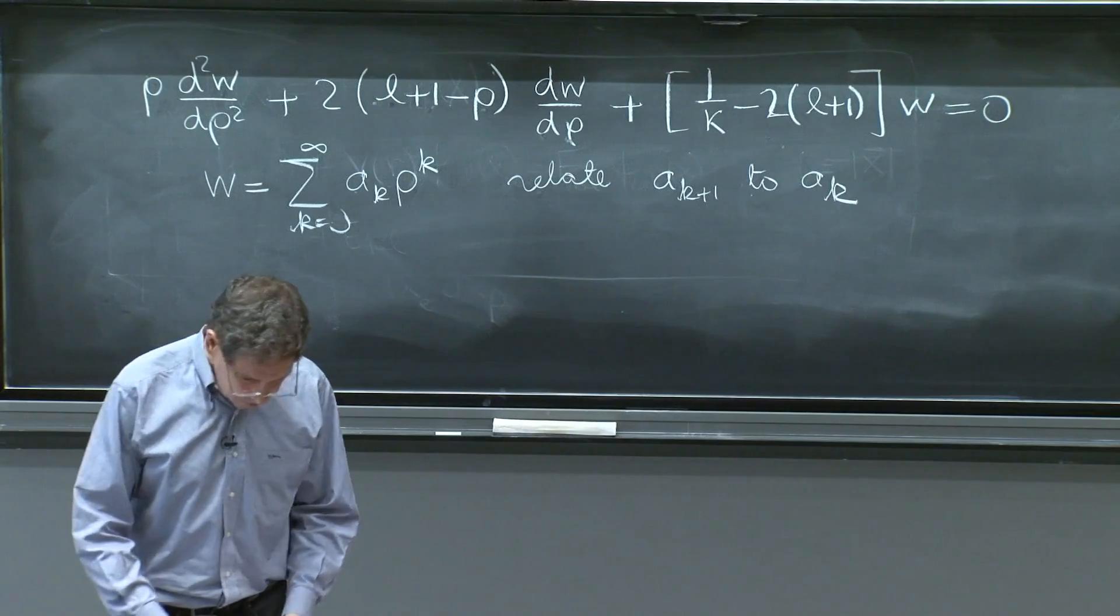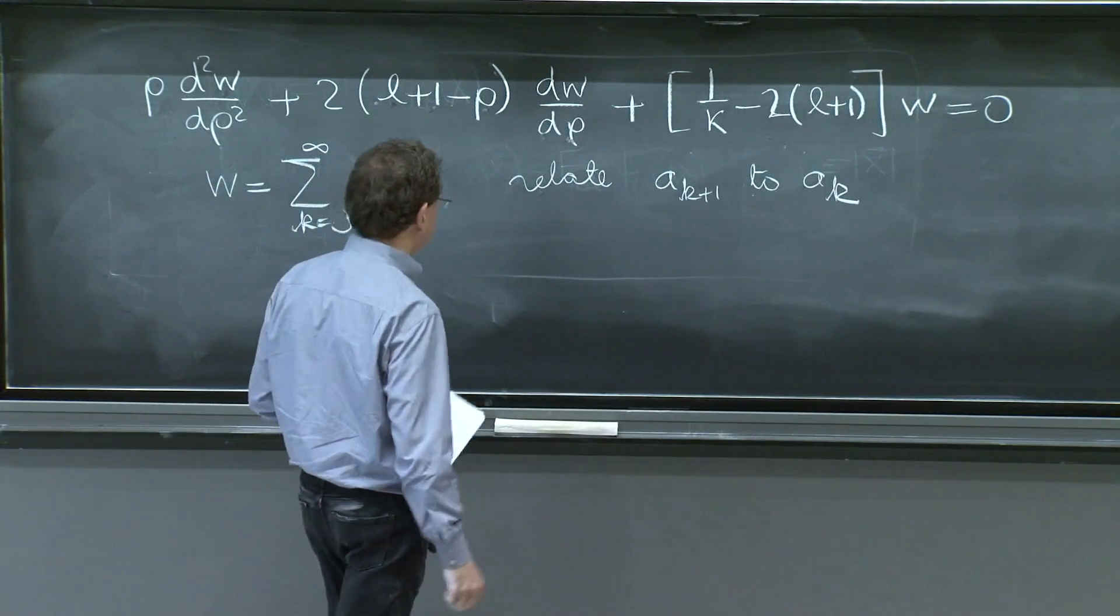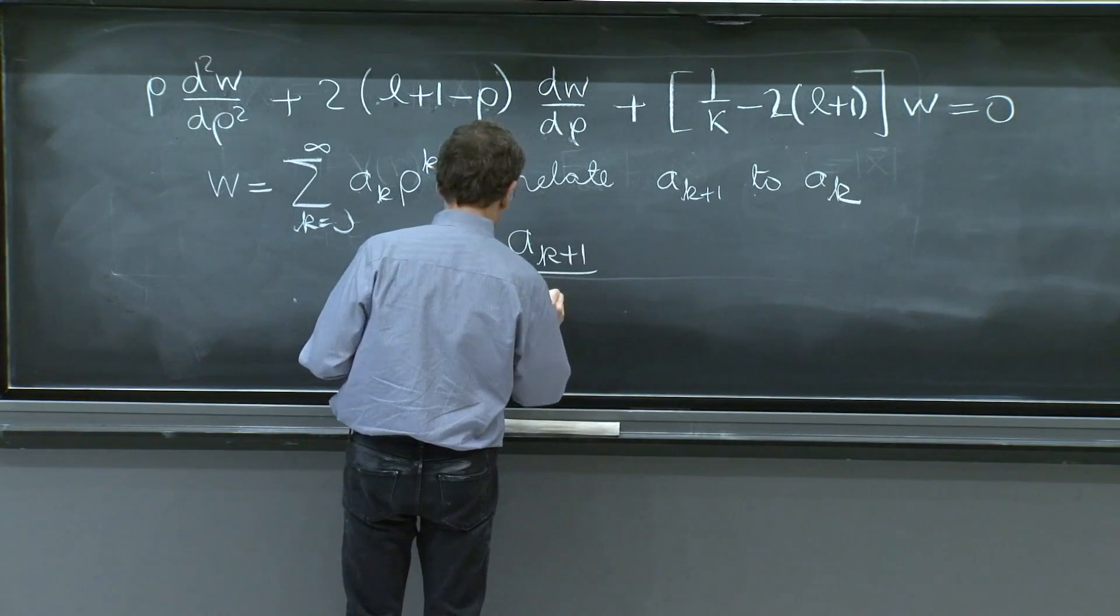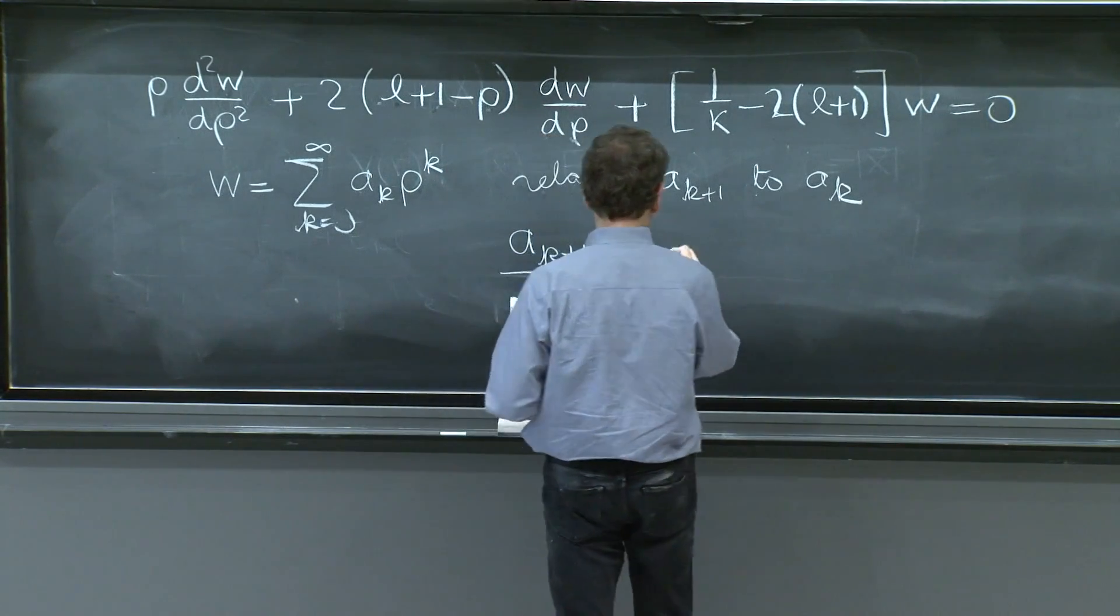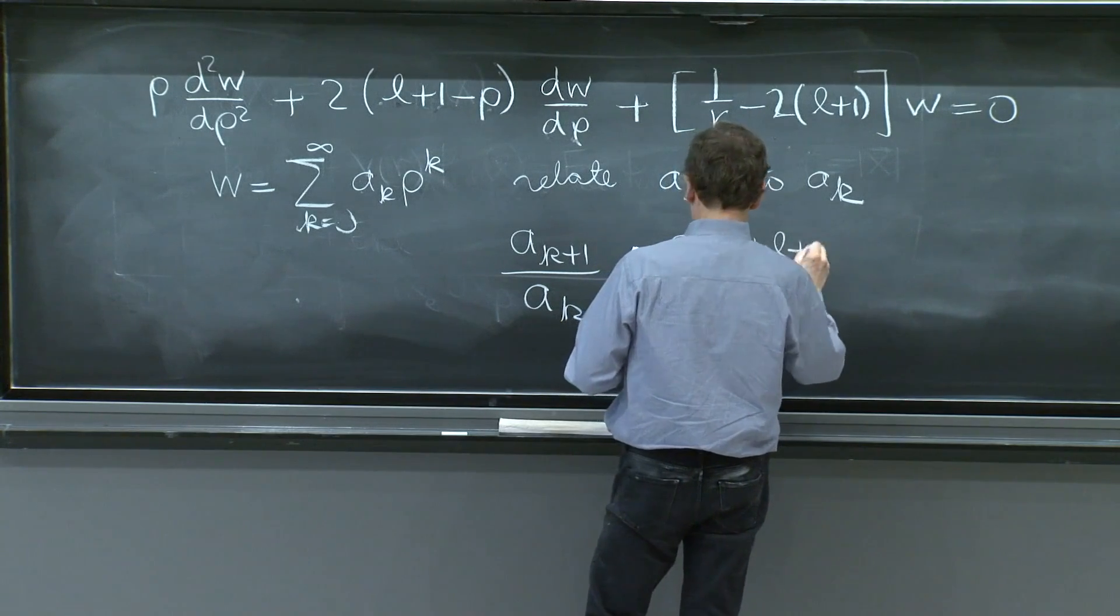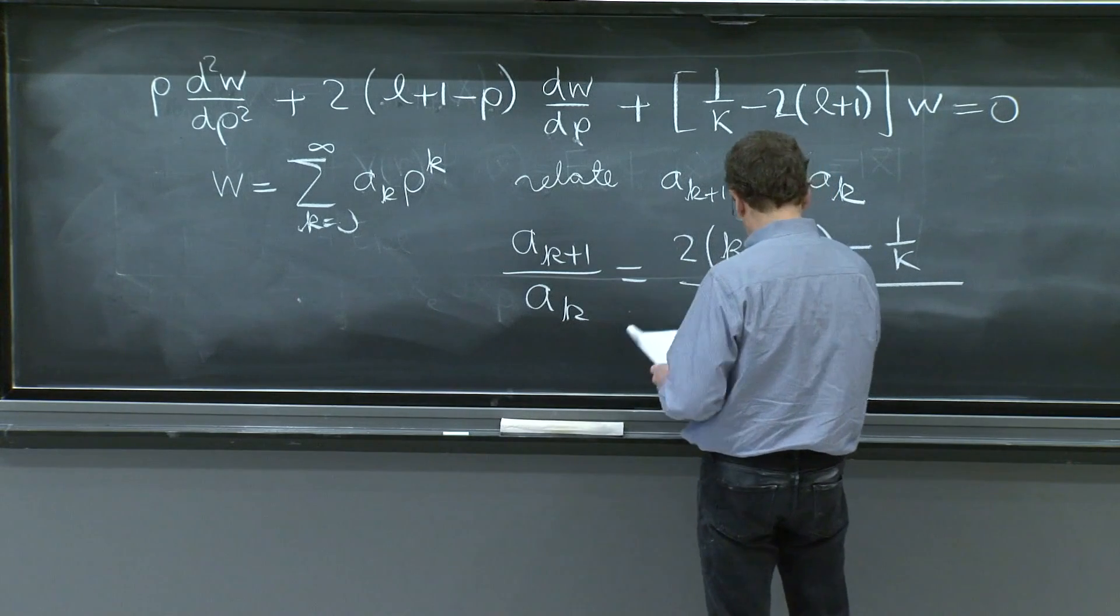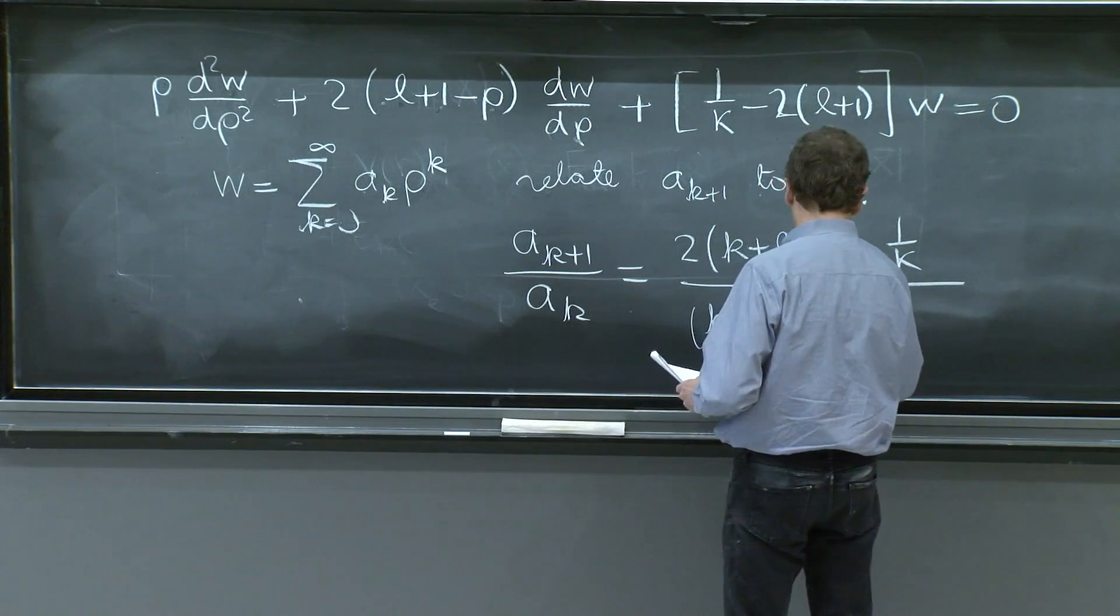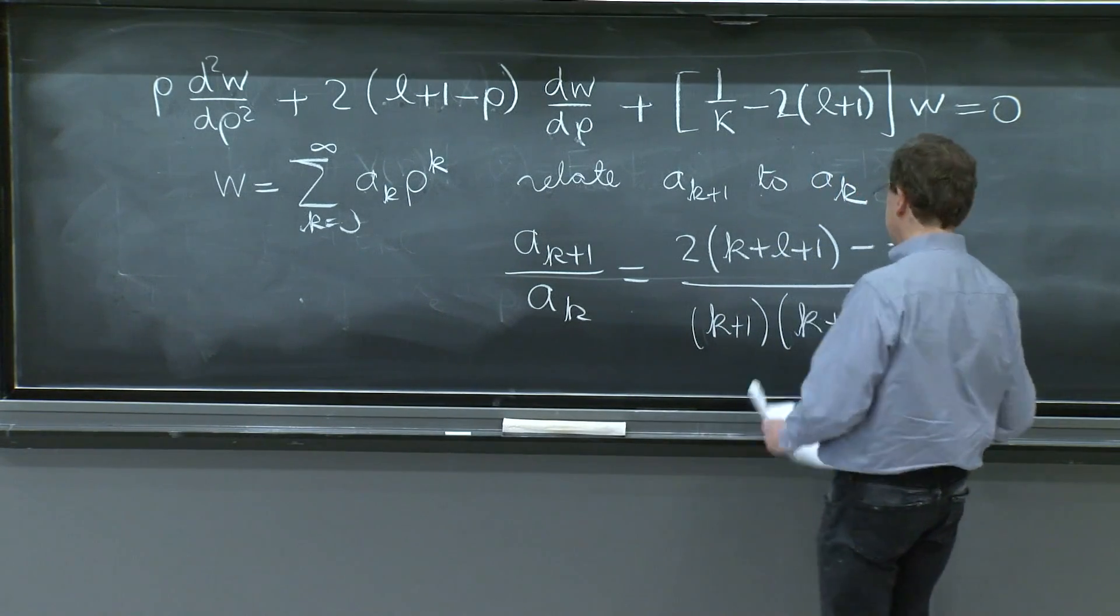It's a good skill to be able to do it, but it would be not a very good use of our time to do it right now. So here is the answer. This is more important. 2 to the k plus l plus 1 minus 1 over kappa over k plus 1 times k plus 2L plus 2.